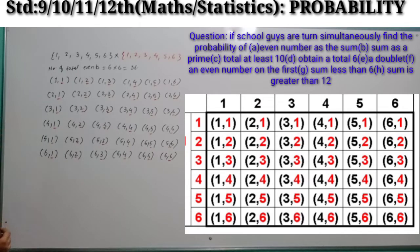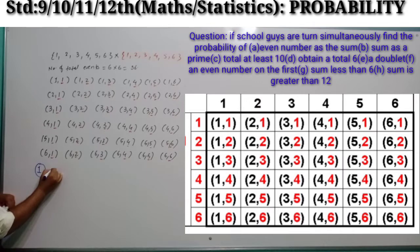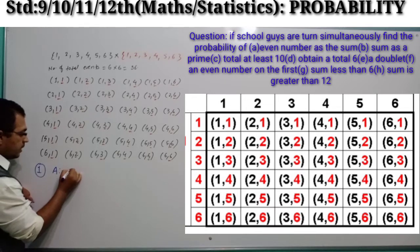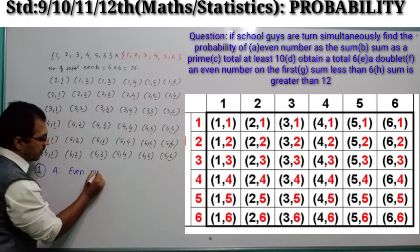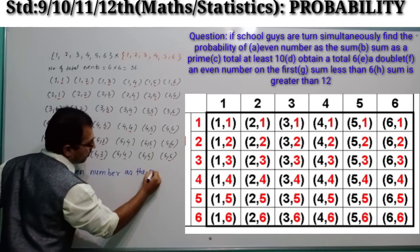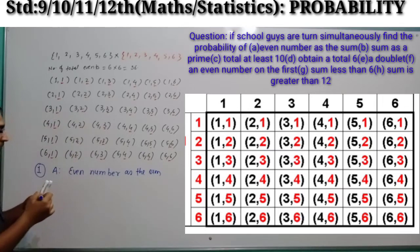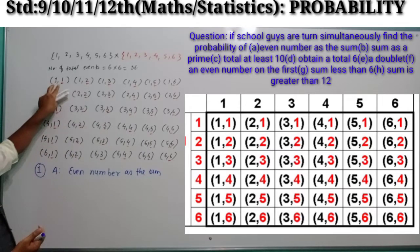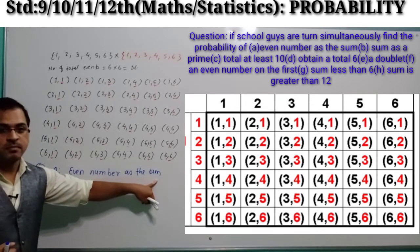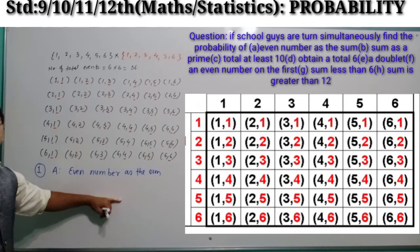Let us consider the first question as Event A: an even number as the sum. We will have to add the pairs of elements and check that their sum is an even number.